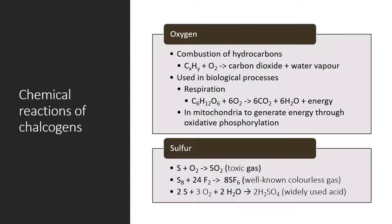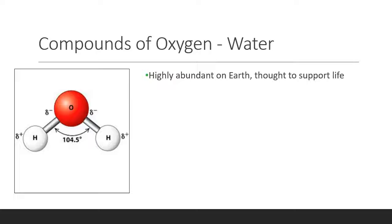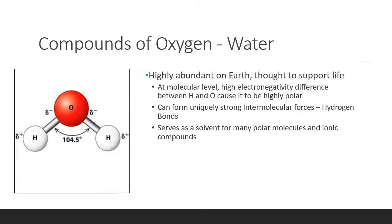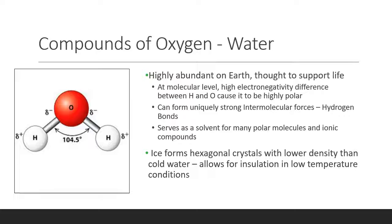Oxygen participates in exothermic combustion reactions to form carbon dioxide and water vapor when combusting an organic compound. However, it can also form metal oxides. It is found as the final electron acceptor in the electron transport chain during aerobic respiration. Sulfur can form sulfur dioxide when reacting with oxygen, which contributes to acid rain. It is also present in sulfuric acid, a widely used strong acid. Water is one of the most common oxygen compounds on earth and supports life because of the very polar nature of the molecule, which gives rise to very strong hydrogen bonds. This causes water to have a high specific heat and gives rise to a hexagonal crystal structure of ice, making it less dense than liquid water and allowing it to serve as an insulating layer.